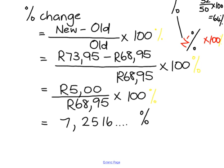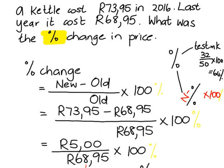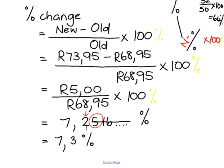How many decimal places do we round percentages to? One or two — I'm going to use one decimal place. When rounding to one decimal place, look at the neighbor: if it is five or more, add one to the previous column and ignore everything else. So the answer is 7.3%. Go back to your question: the percentage change in price was 7.3%.